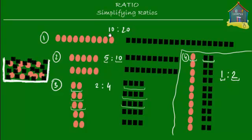Comparing all the ratios — 10 to 20, 5 to 10, 2 to 4, and 1 to 2 — you'll notice that the second term in each ratio is twice as much as the first term. 20 is double 10, 10 is double 5, 4 is twice 2, and 2 is twice 1.